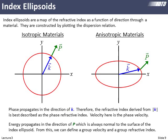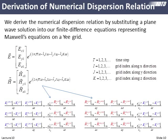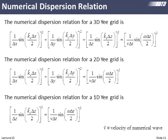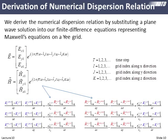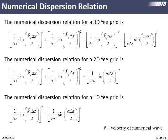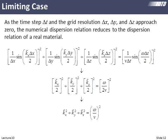Now we take our equations for an arbitrary plane wave and plug them into the finite difference equations on the Yee grid — turn the crank and out comes a new dispersion relation specifically for a wave on the Yee grid. Here's what it looks like for a fully three-dimensional Yee grid. It resembles the physical dispersion relation but has additional terms due to the interaction of the wave with the Yee grid. We can also reduce it to two-dimensional and one-dimensional forms. Here v is the velocity of the wave on the Yee grid.